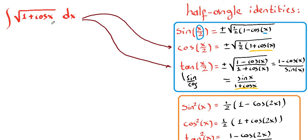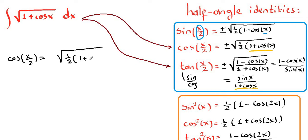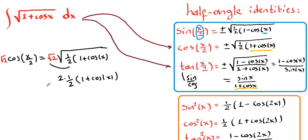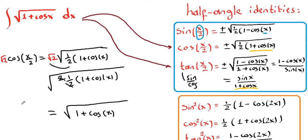Before we start integrating, let's rewrite our expression for 1 plus cosine of x. We'll use cosine of x over 2, which is the easier path. We know that cosine of x over 2 equals the square root of one half times (1 plus cosine of x). If we multiply both sides by the square root of 2, the two and one-half cancel under the radical, giving us the square root of (1 plus cosine of x). This is exactly our integrand, so our integral equals the square root of 2 times cosine of x over 2.